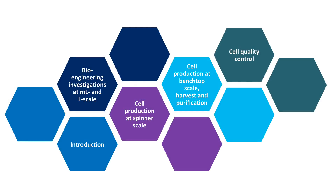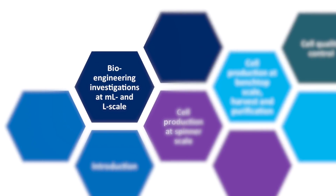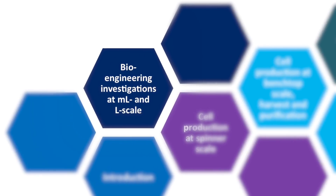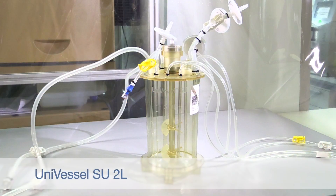This video is part of the e-learning series on expansion of mesenchymal stem cells in stirred single-use bioreactors, specifically cells derived from human adipose tissue and generally referred to as MSCs. In this section we focus on bioengineering characterization of bioreactor systems. As an example, the principles of bioengineering characterization are presented for the universal SU2Liter system.